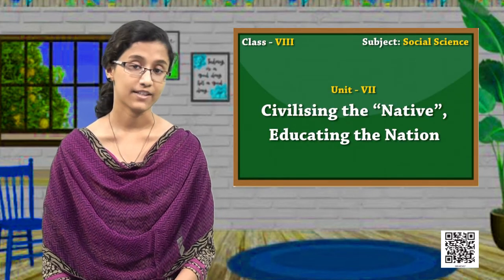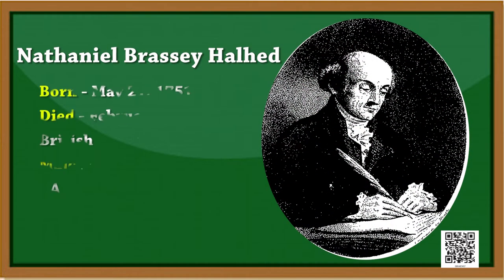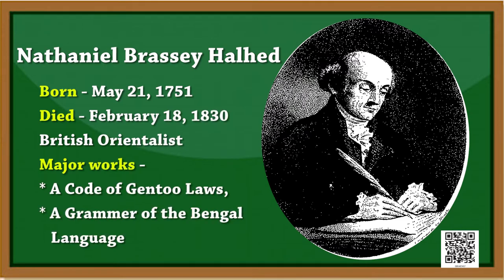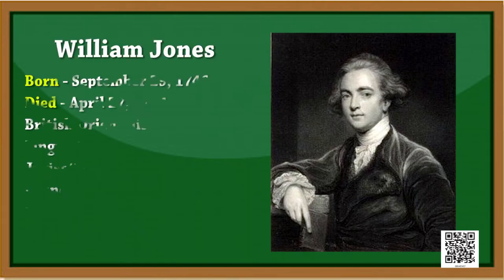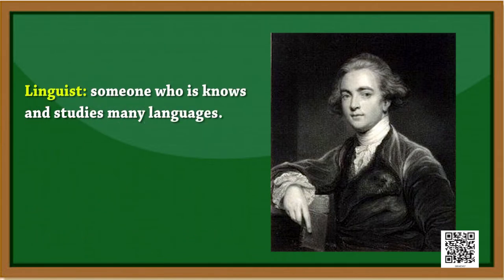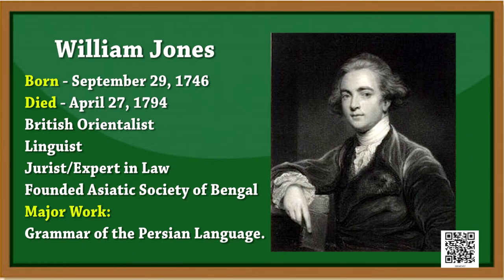Let us look at some of the British officials who led this change. Nathaniel Brassey Halhead had translated a digest of Hindu laws as part of British efforts to bring uniformity in the legal system. Another person interested in Indian culture was William Jones, a linguist and a jurist. A linguist knows and studies many languages, while a jurist is an expert in law. William Jones came to Calcutta in 1783 when he was appointed as a junior judge in the Supreme Court set up by the East India Company.